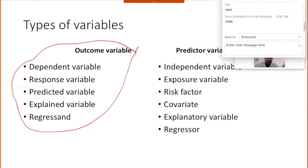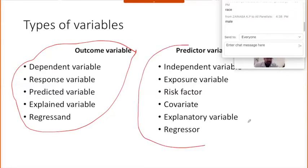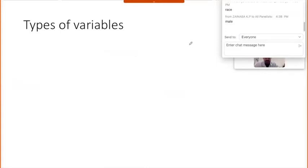Similarly, there are predictor variables — for instance, whether the outcome of labor depended on the age or sex of the individual. These predictor variables are also known by different names: independent variable, exposure variable, risk factor, covariate, explanatory variable, or regressor. Please don't get confused — they all refer to the same risk factor you are studying.